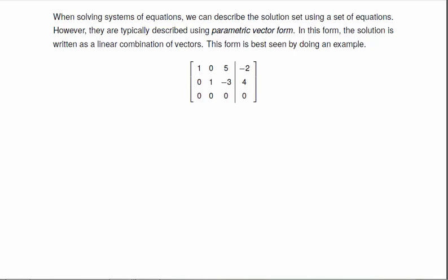For example, I have this matrix, and I can pull out the equations x1 plus 5x3 equals negative 2, x2 minus 3x3 equals 4.